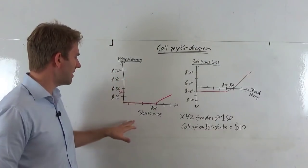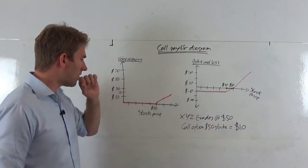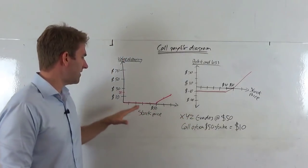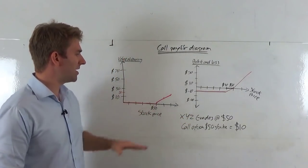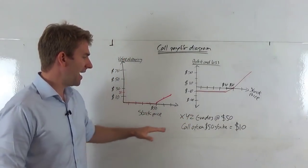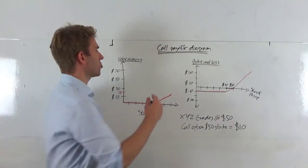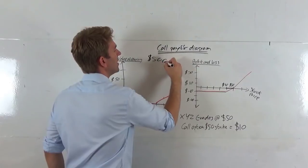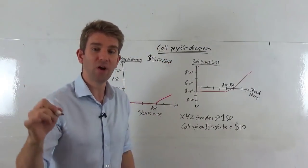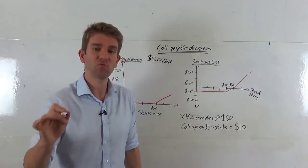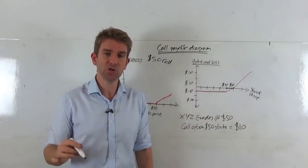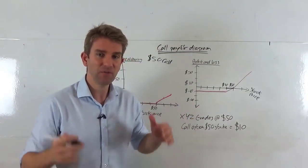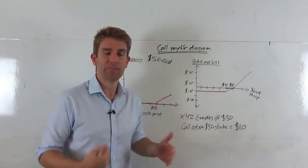So the first diagram: we have stock XYZ trading at $50, and we're looking to buy a call option with a $50 strike. A call option is the right, but not the obligation, to purchase XYZ stock at $50 at expiry.